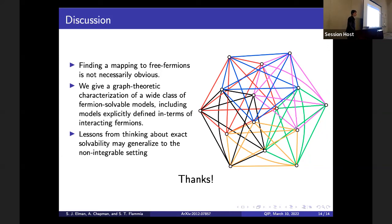Question: You mentioned a QDIT generalization. Can this be done for parafermions, or do you need more tools? You'd need something that goes beyond binary graph theory — in the anti-commuting/commuting case everything is a binary relation, but for parafermions you might consider generalizing to directed or weighted edges. We've thought about it and believe the same sort of method should apply, but there are some important details to work out.